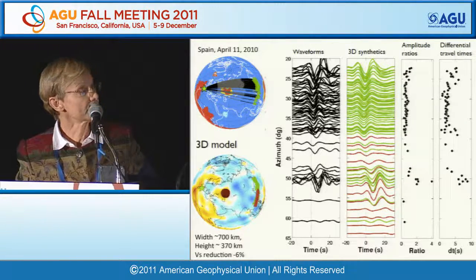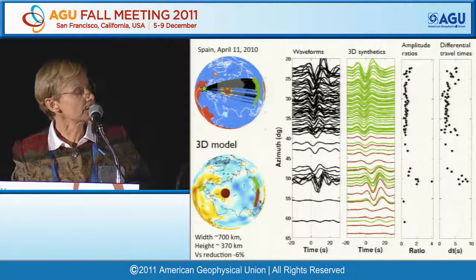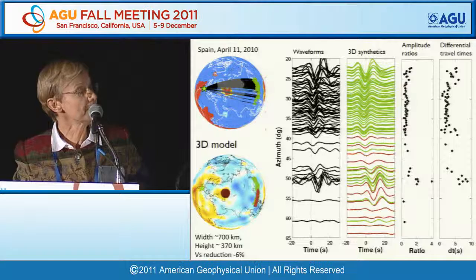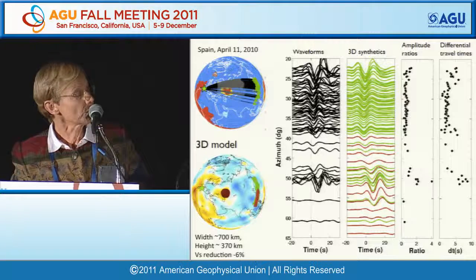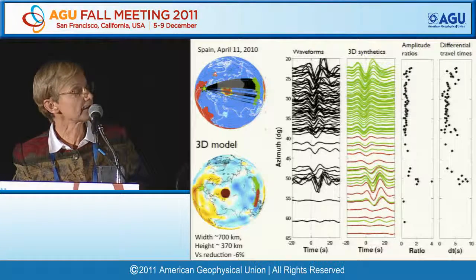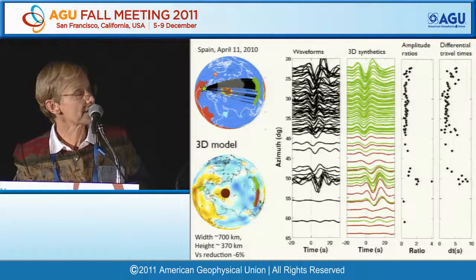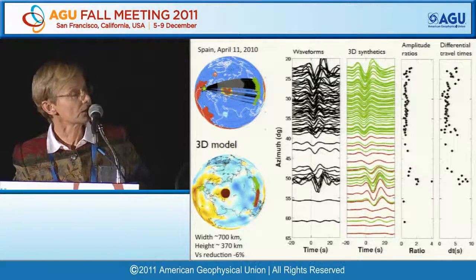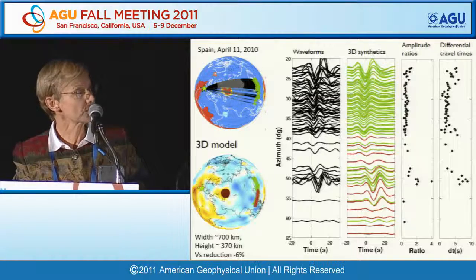The Permian anomaly is distinct from and separate from the LLSVPs, and not quite the same as any of the ultra-low velocity zones that have been documented.